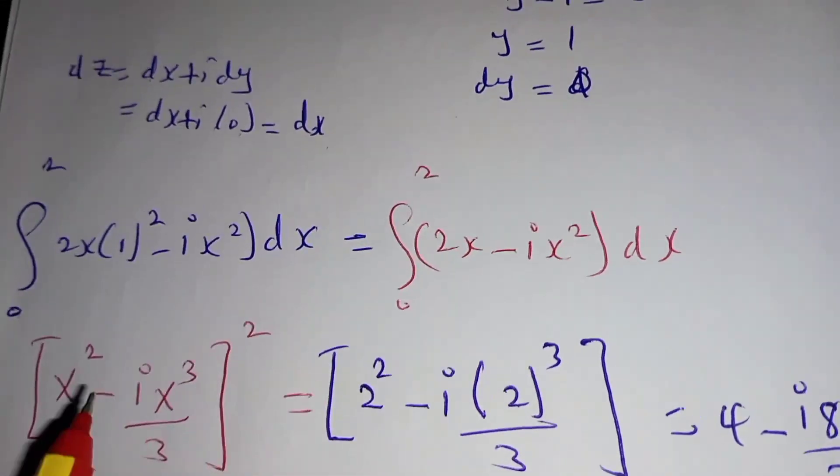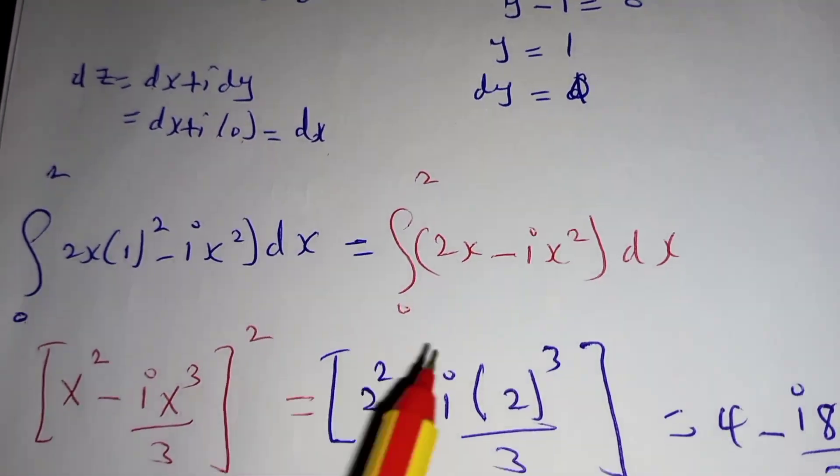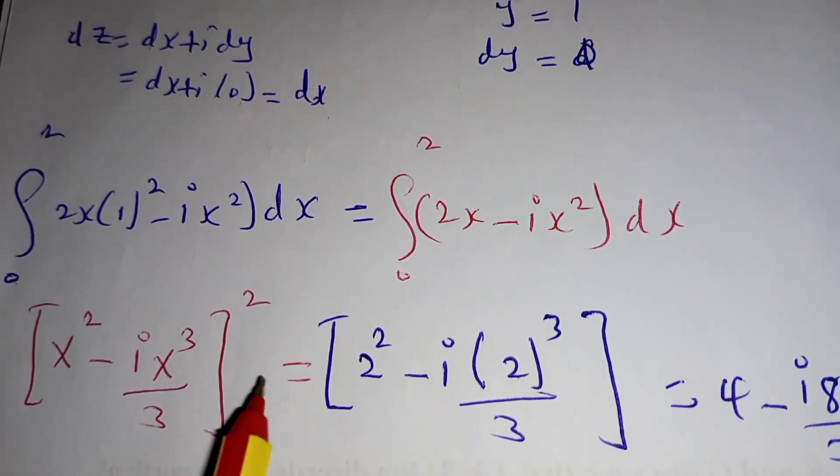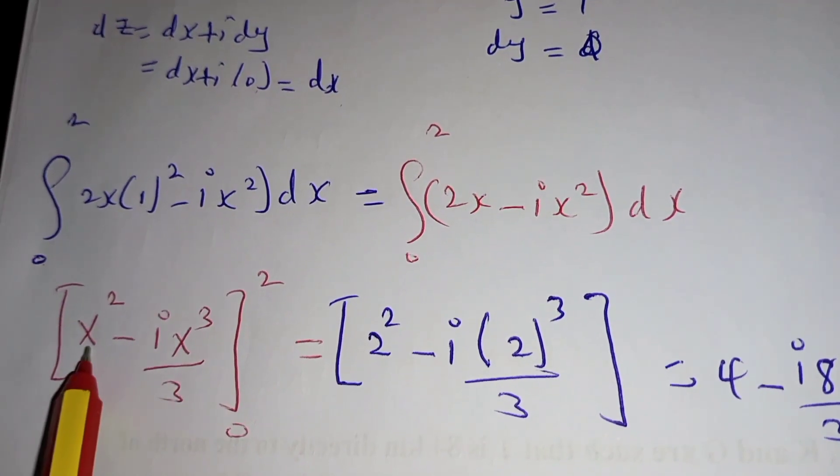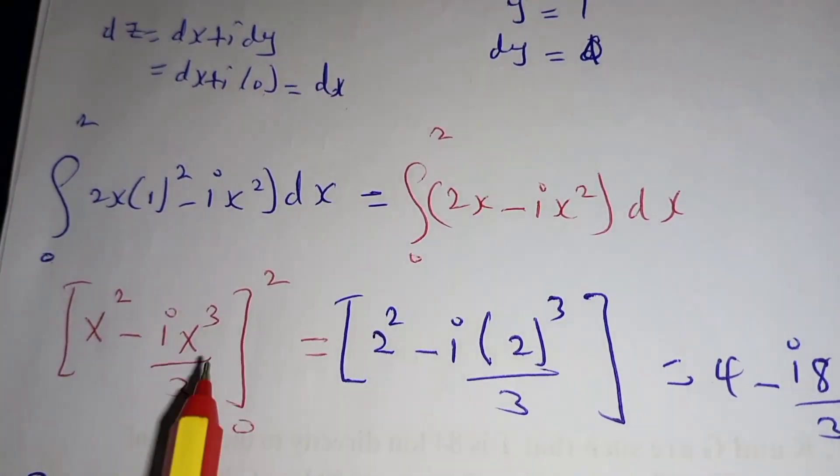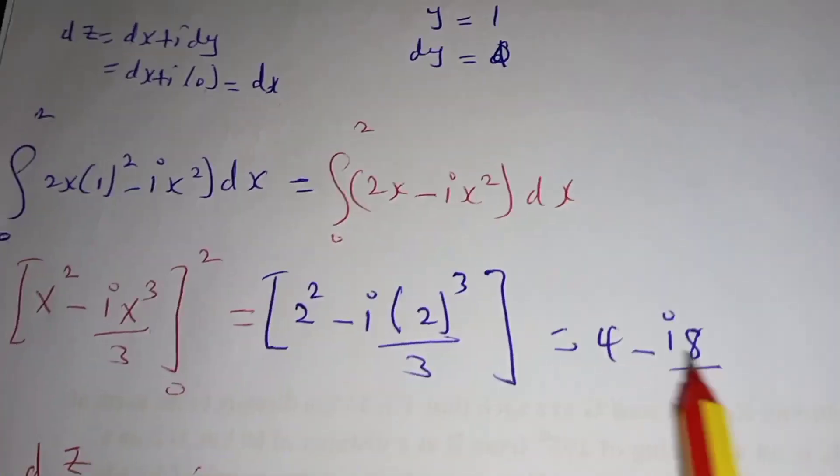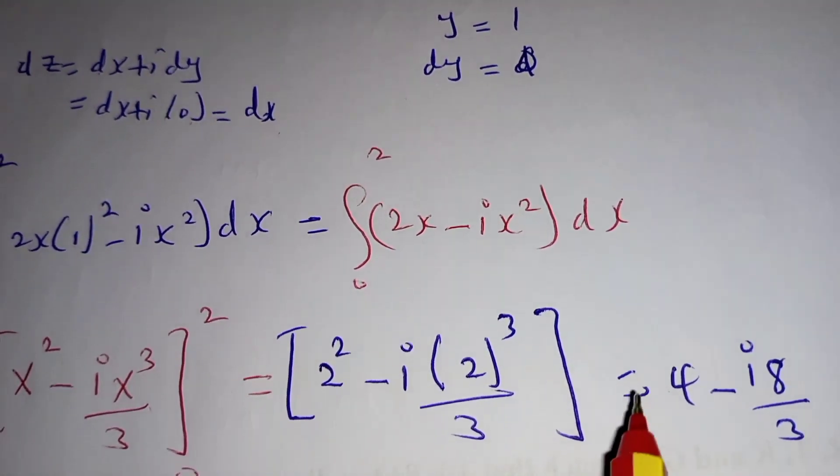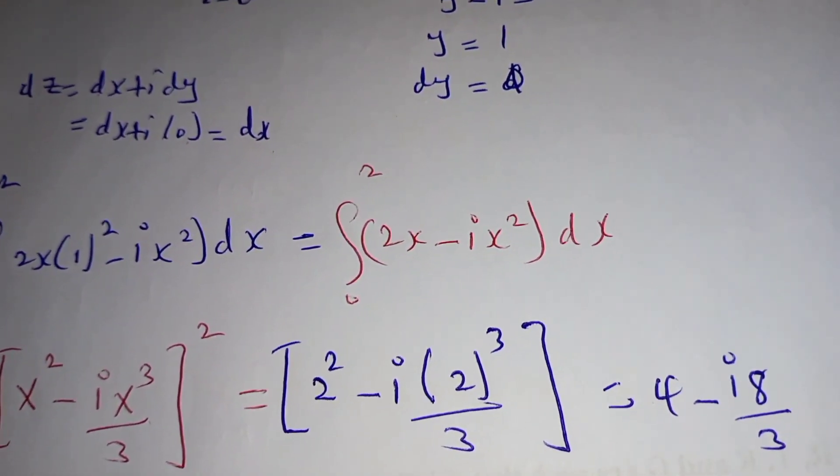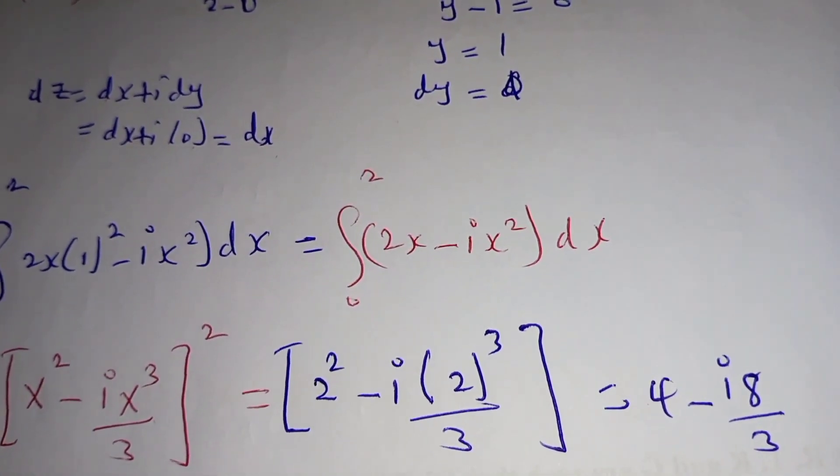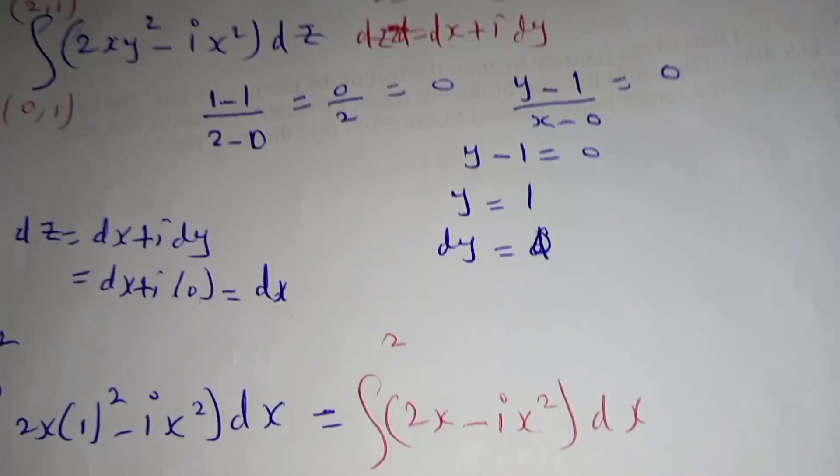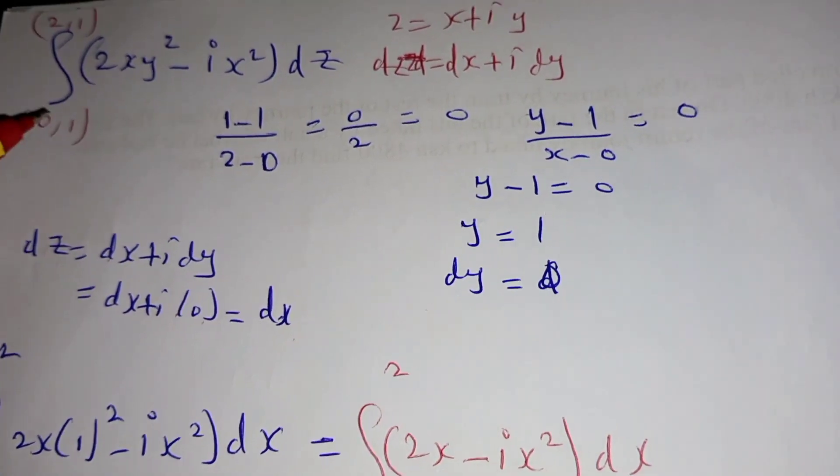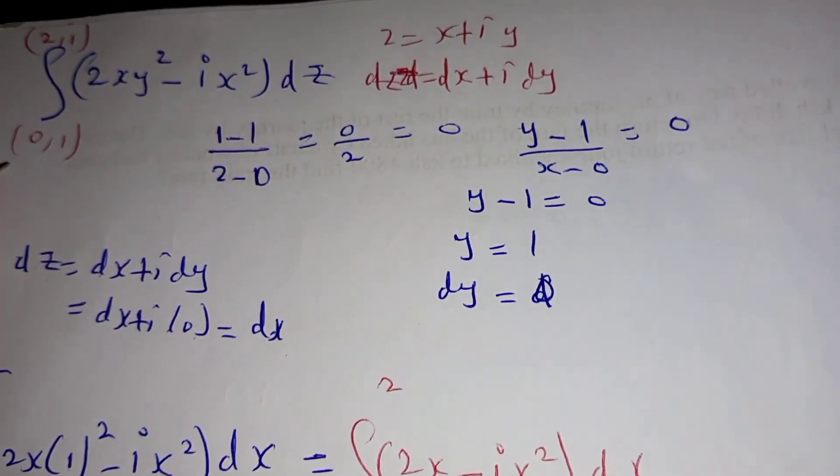When you integrate, 2x integrated gives x². x² integrated gives x³/3. Then you put in the limits: 2² is 4, 2³ is 8, so we get 4 - i(8/3). That is how we integrate this simple complex integral by use of these simple method steps.